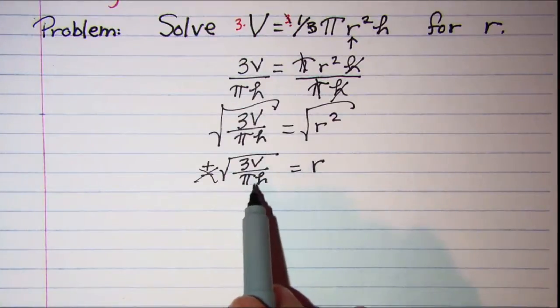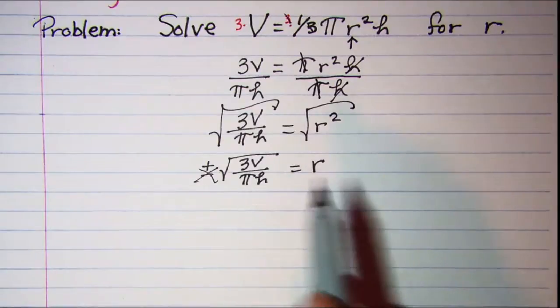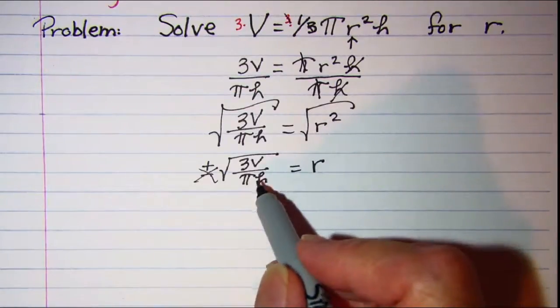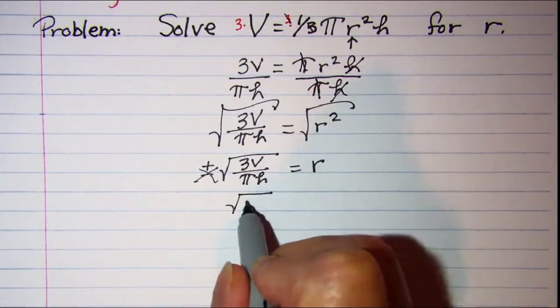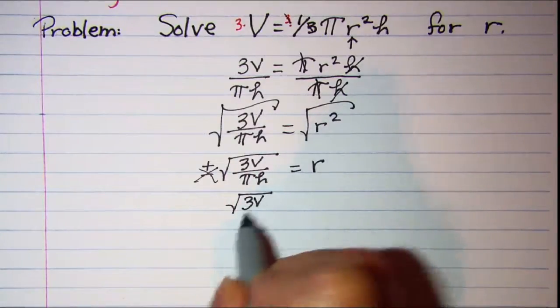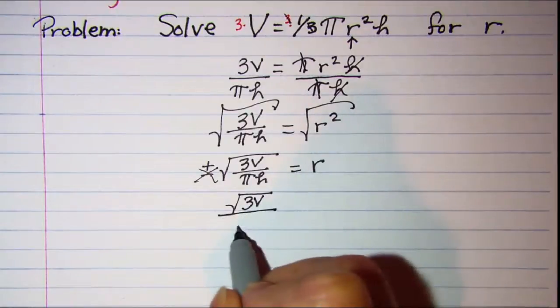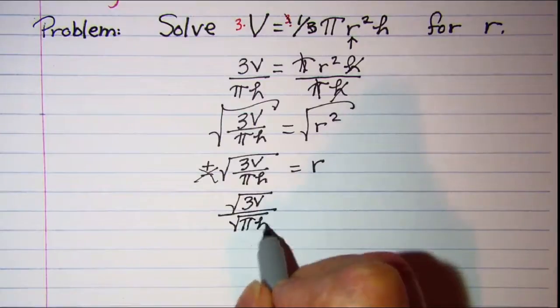Our only other thing that we would do with this is to rationalize the denominator. Let me break this radical into two separate radicals. First I have the square root of 3V in the numerator and then the square root of pi h in the denominator.